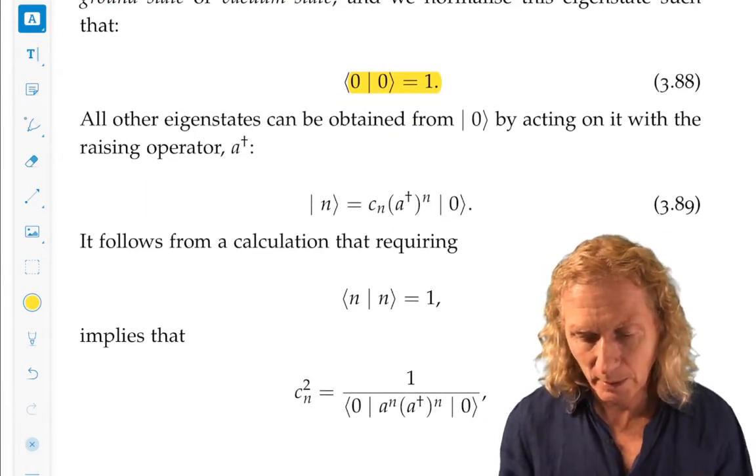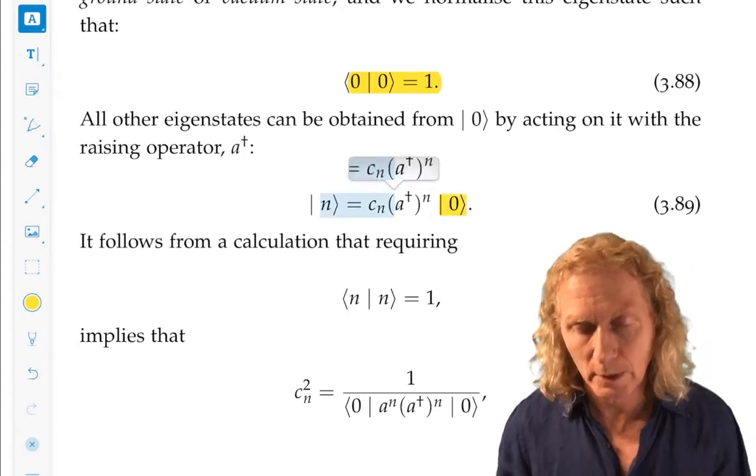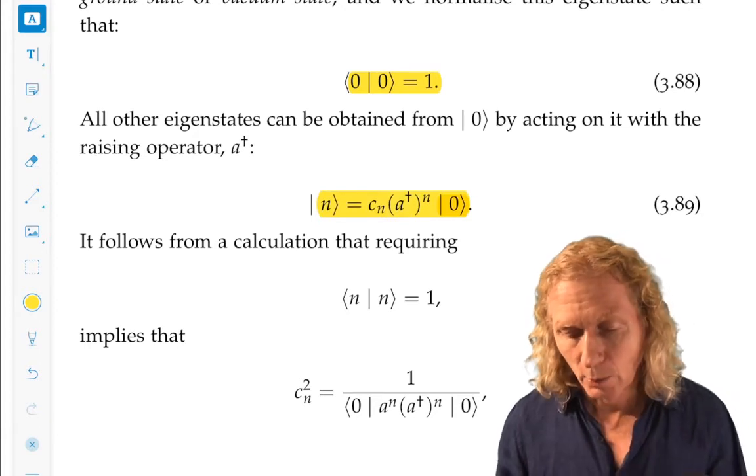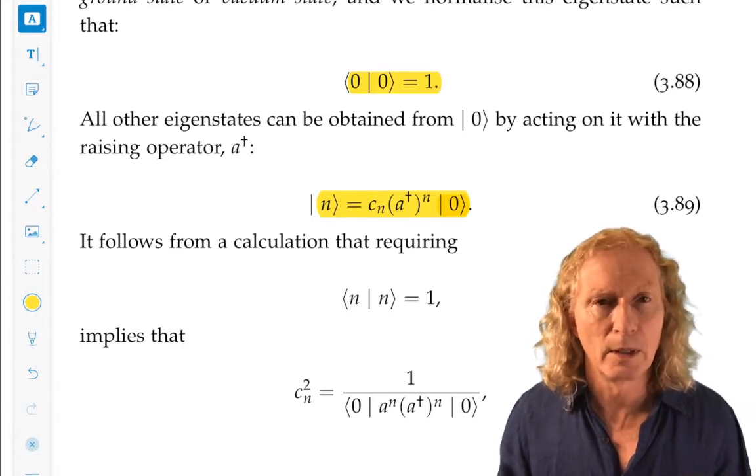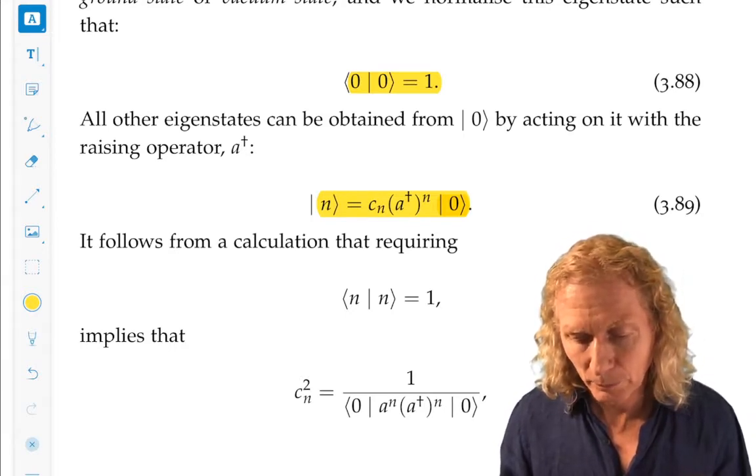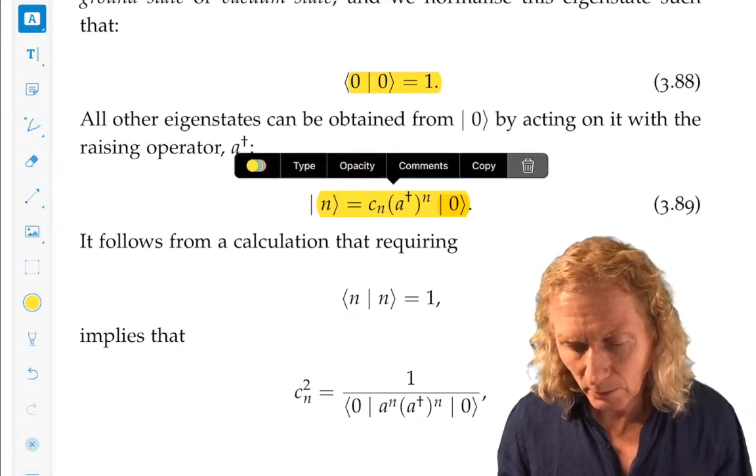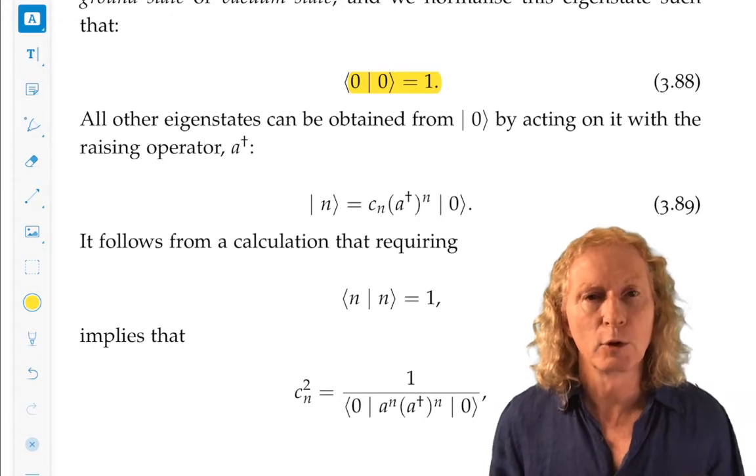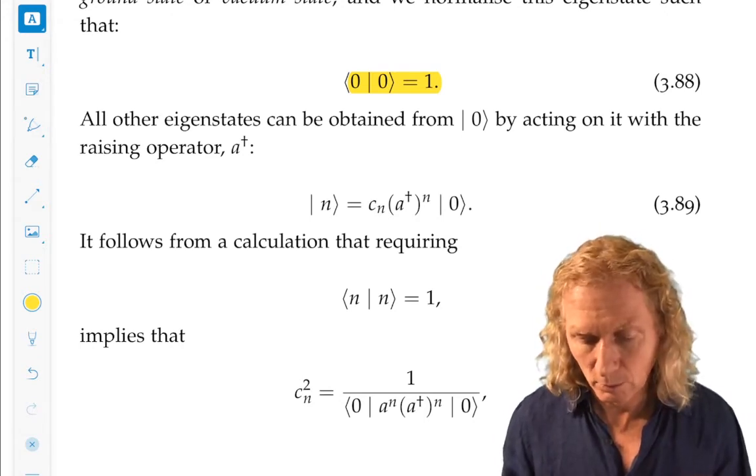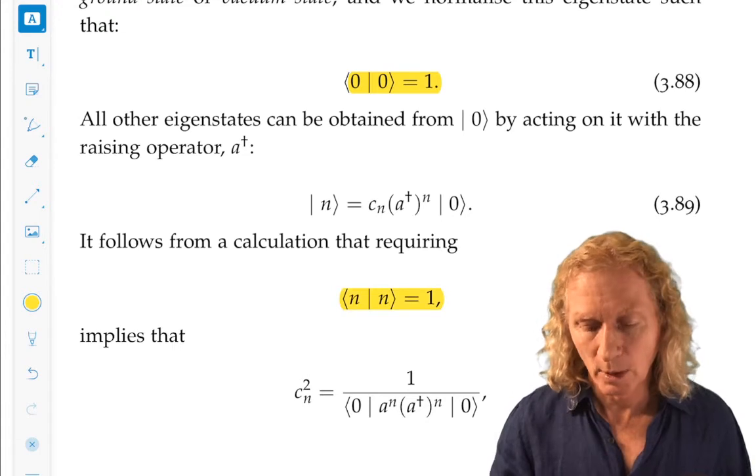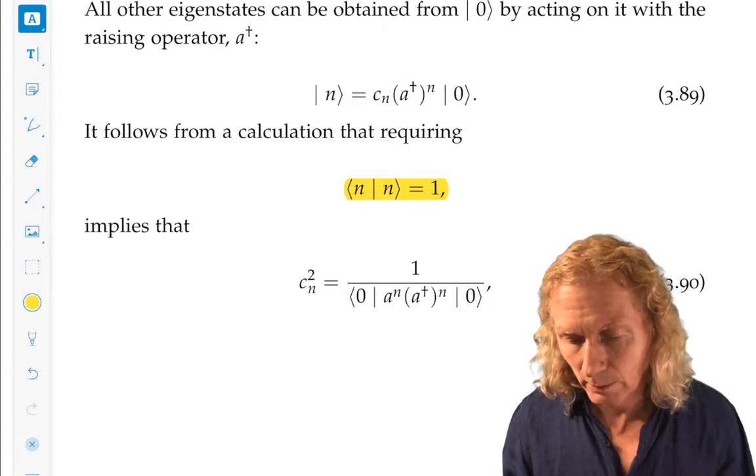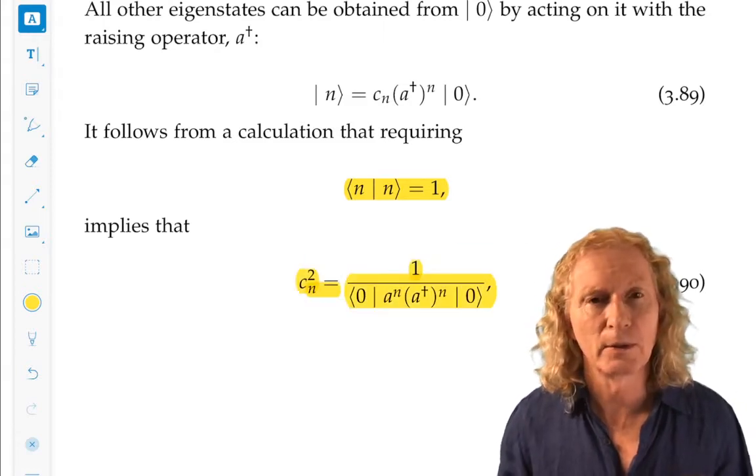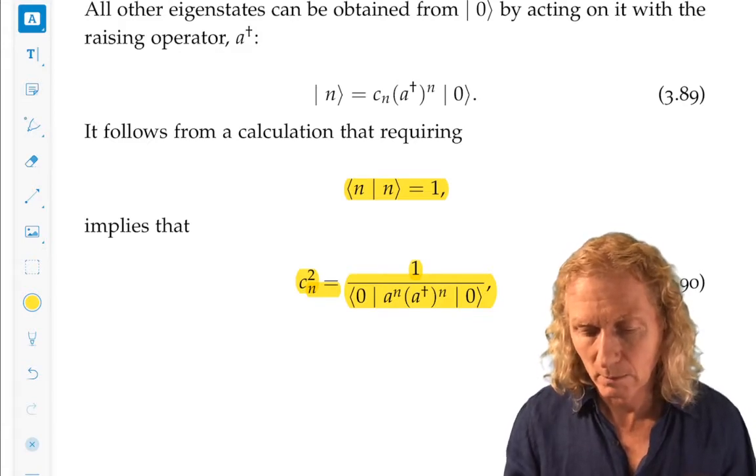Now, as I just said, if we know the ground state, we can act on it over and over again using the formula I just showed you with the raising operator, and if we act on it n times, we get the nth eigenstate. The cn is a constant that we have to choose at each step for normalization. We require normalization, and then you can use this condition along with equation 3.89. Check that.